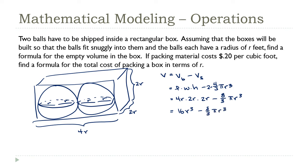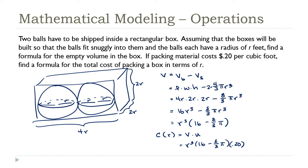Combining these, the exterior volume is 16r³ − (8/3)πr³, which factors to r³(16 − (8/3)π). The cost c(r) equals this volume times the unit cost of $0.20 per cubic foot. Evaluating the numerical bracket on a calculator, this simplifies to 2.362r³. So c(r) = 2.362r³ is my cost function for the packing material surrounding the two spheres.